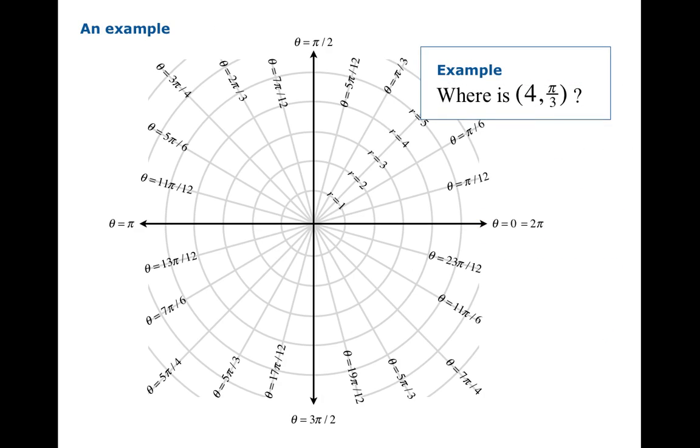So let's look at an example. Where is the point (4, π/3) with these new so-called polar coordinates? Well, r is 4. The distance from the origin is 4, so we're somewhere on this circle. And the direction is π/3. So where are we? We have to be right there at that point. That is the point you get using polar coordinates (4, π/3).